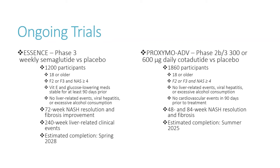The second ongoing trial is a Phase IIb/III trial with daily cotadutide, which is another GLP-1 agonist. It has a goal of a larger participant load of 1,860, and it will look at 48 and 84-week endpoints for NASH resolution and fibrosis.